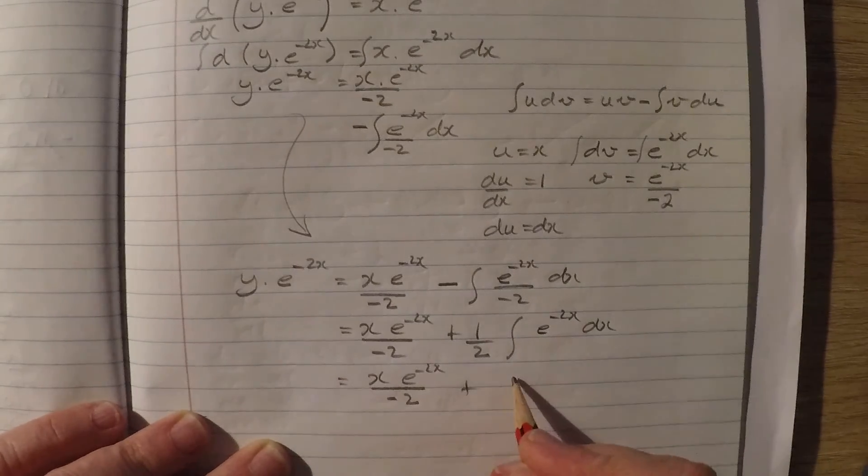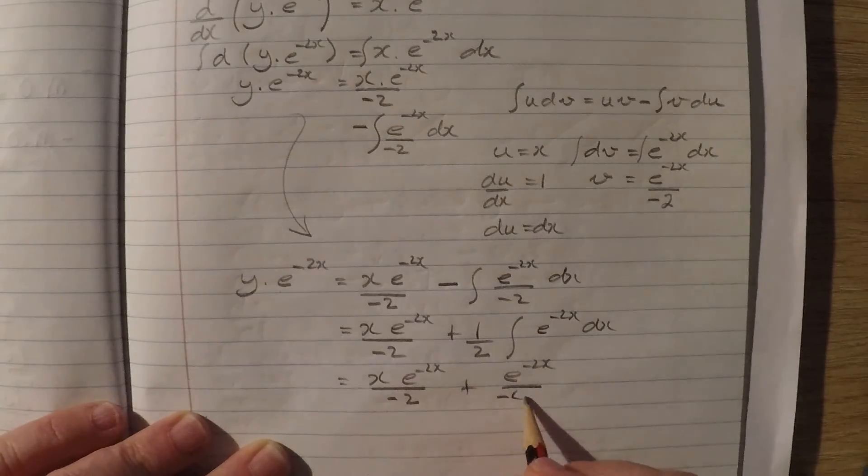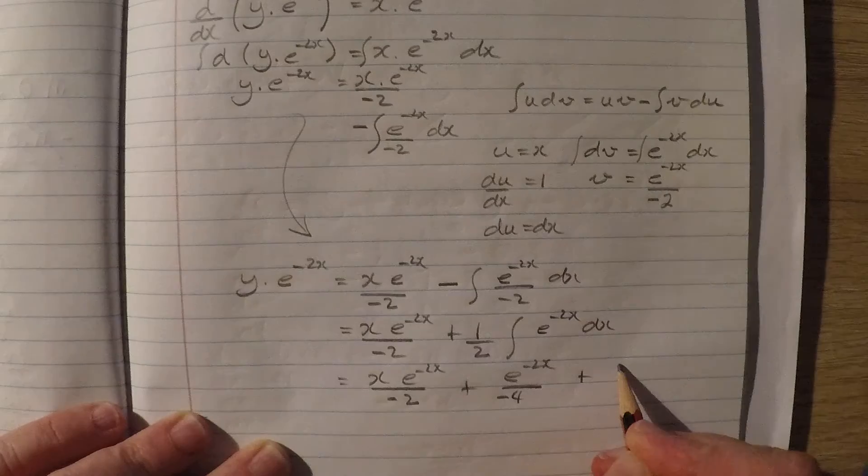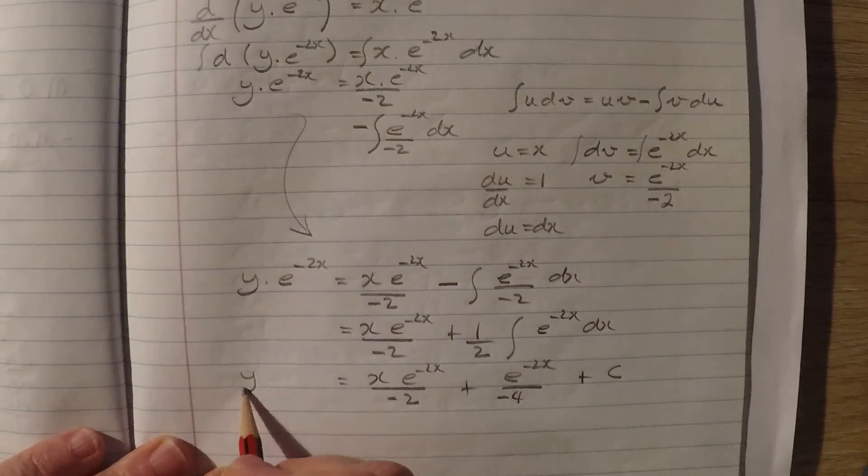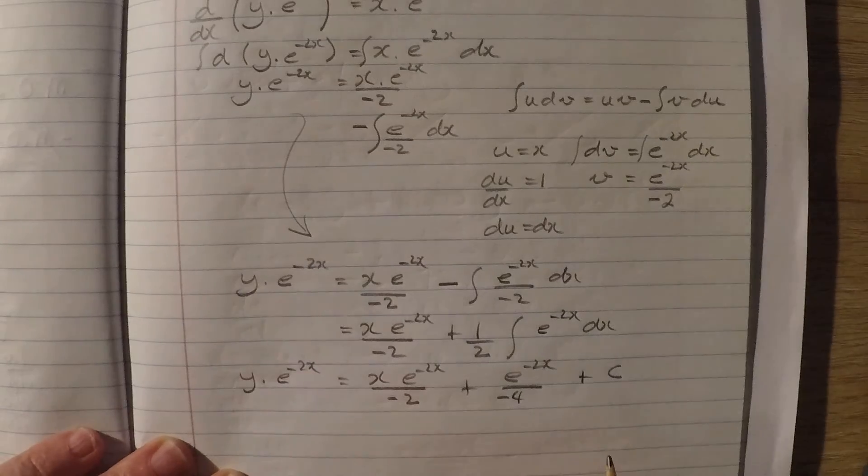So I'll have here e to the negative 2x, and by the time I divide this it will be negative 4, plus a constant of integration. Remember this was all y times e to the negative 2x.